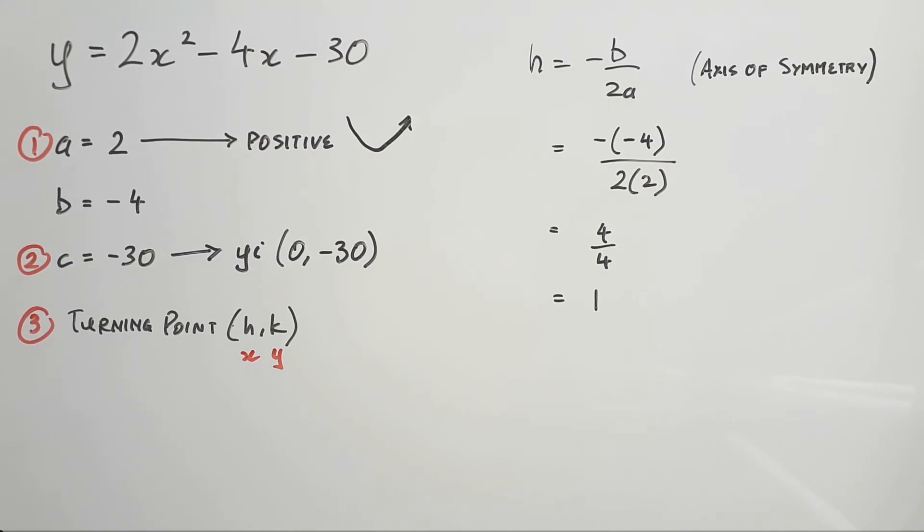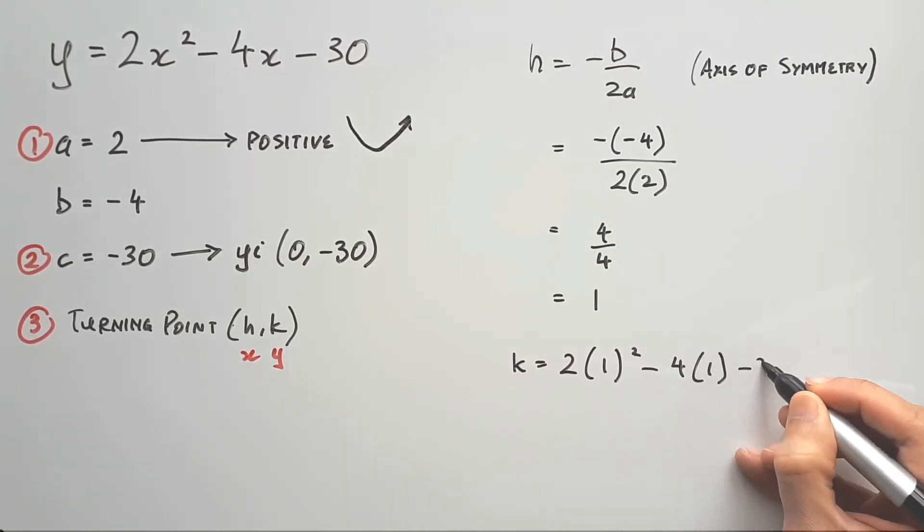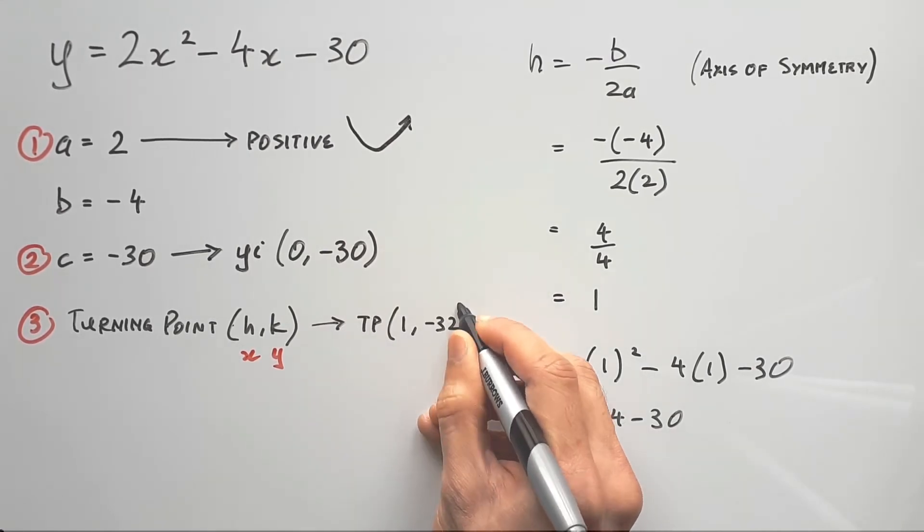To find k, which is a y value, use the quadratic equation itself. Sub positive 1 in and it works out to be negative 32. So our turning point is 1 comma negative 32.